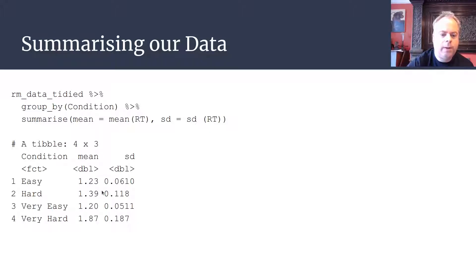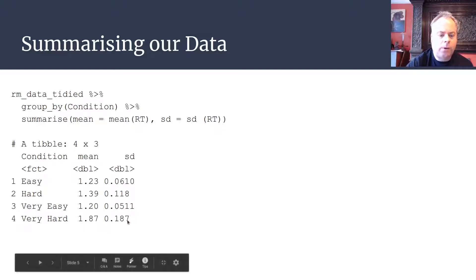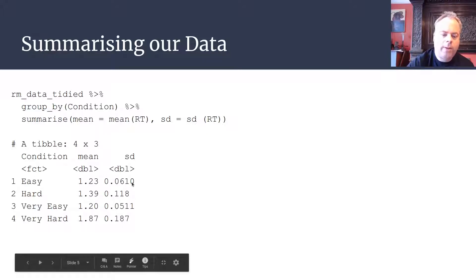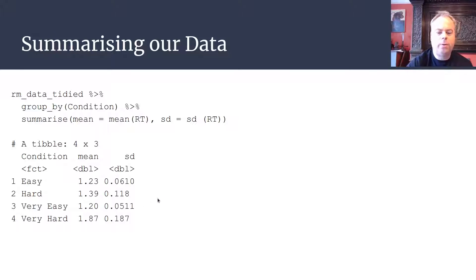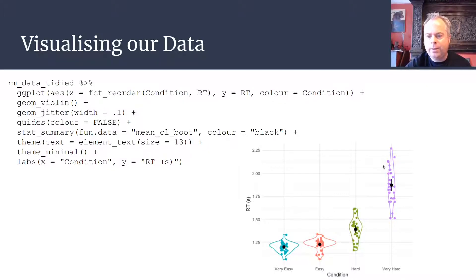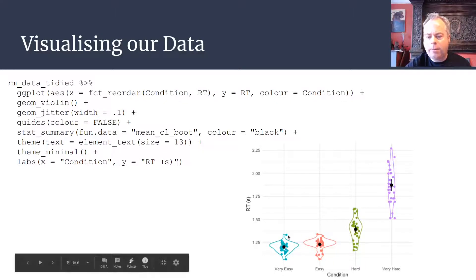The hard condition sits somewhere in between. Looking at the standard deviations, there's more variability in the very hard condition than the hard condition — perhaps because some people find the very hard condition very hard while others don't. The standard deviations for the easy and very easy conditions are fairly equivalent, suggesting people respond more similarly in those conditions. We can also see this in the visualization, where violin plots capture the shape of the distribution and geom_jitter shows the raw data points.